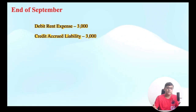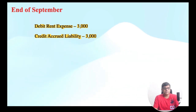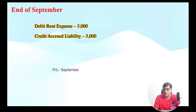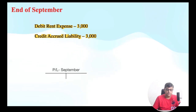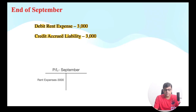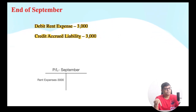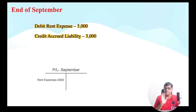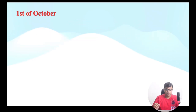Debit will be your rent expense and credit will be accrued liability — 3,000. If we post like this, the benefit is that in the September P&L we are going to show that 3,000 as the expense entry. Although we have not received the invoice, we are still going to show this in our P&L. Plus we are also going to transfer this balance to our cost of production calculation, because rent is an overhead too. So this is our Step 1.